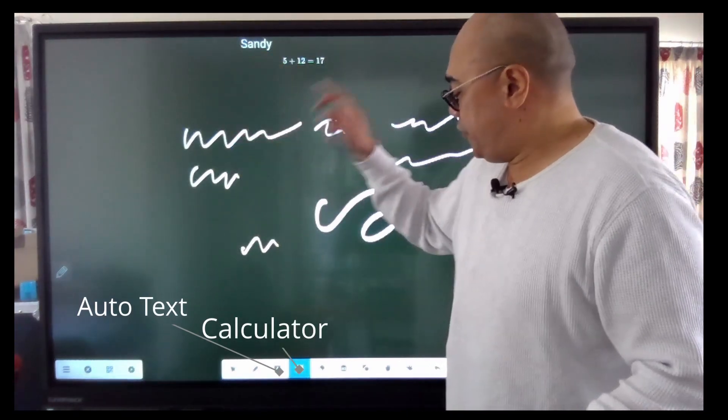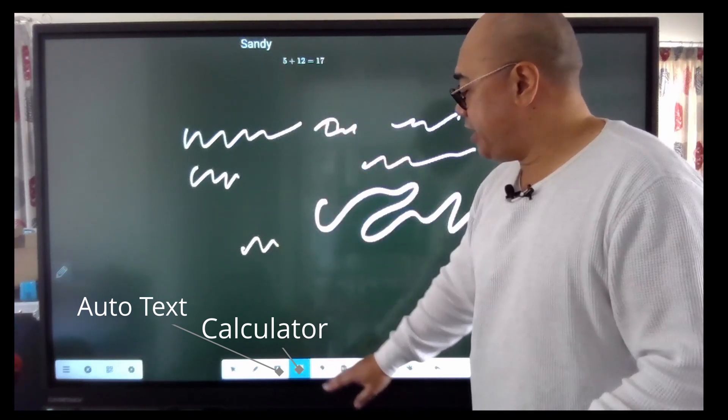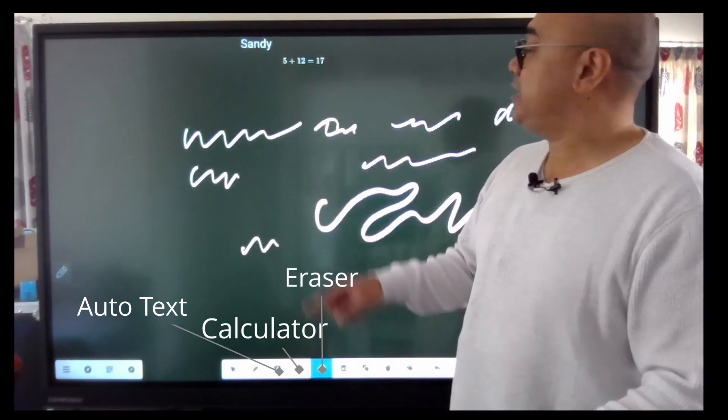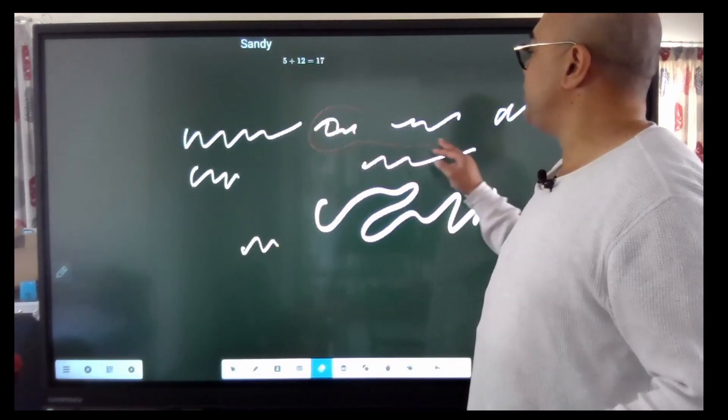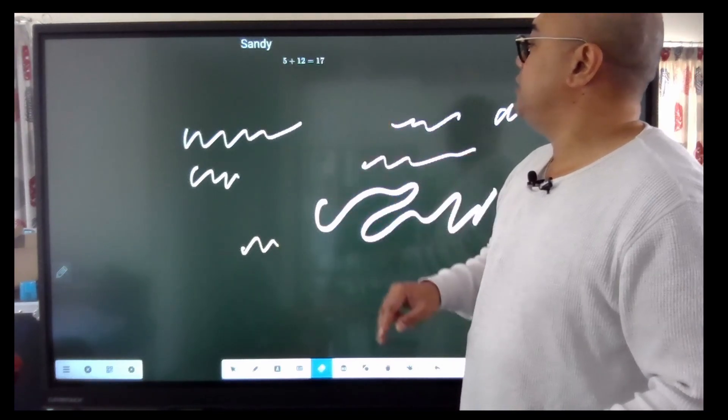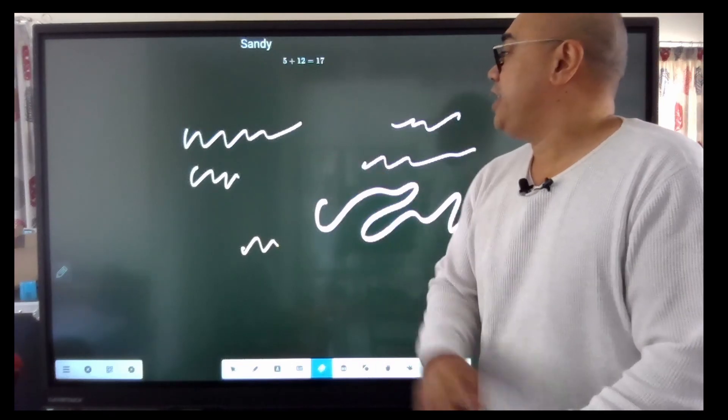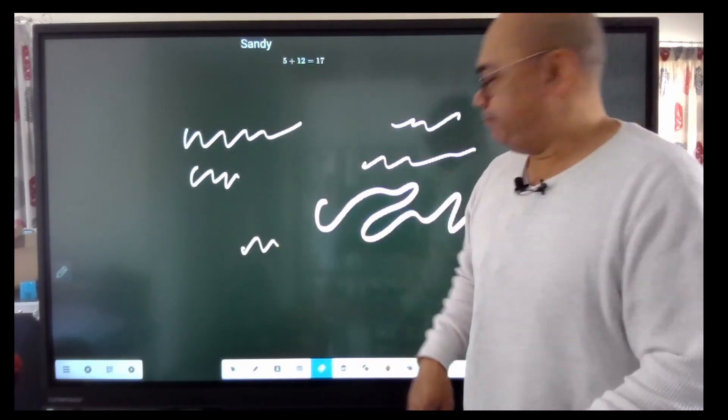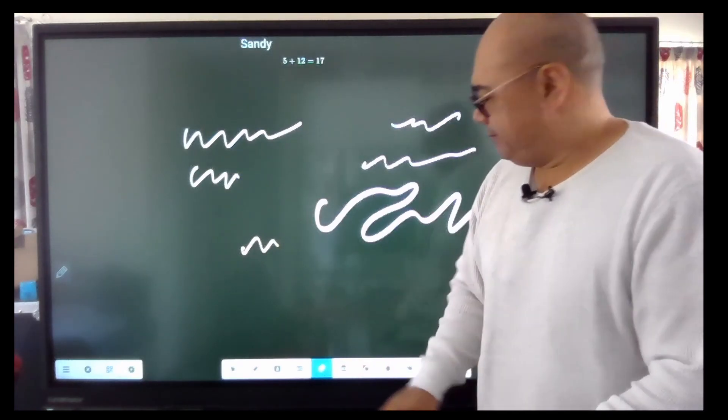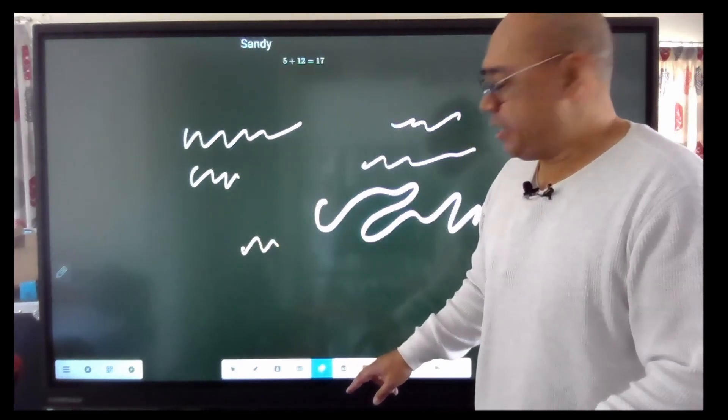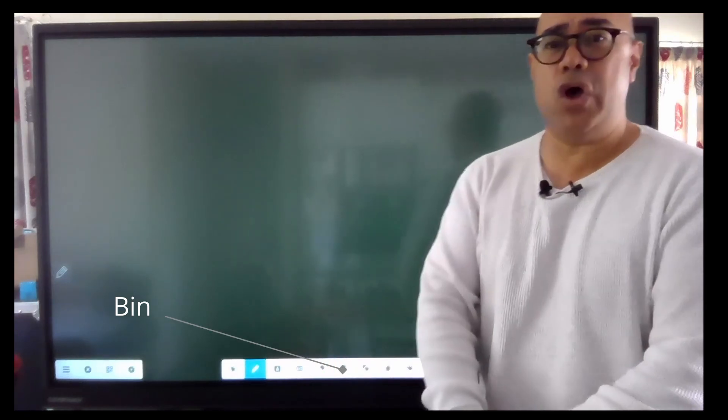You've got your auto text, your calculator, the eraser. Don't need this bit here. I can circle this, don't need to circle anything else, just that bit there, and it gets rid of it. Gone. The next part here is the bin. It's pretty self-explanatory. Press that, everything's gone.